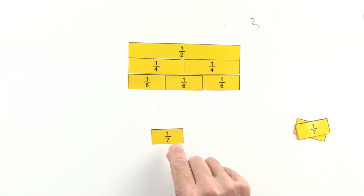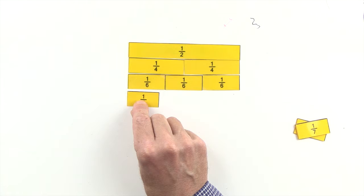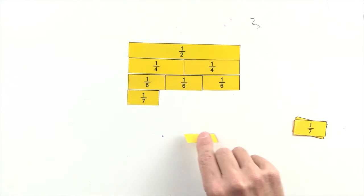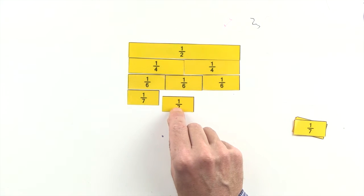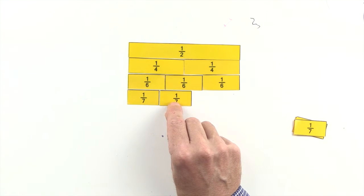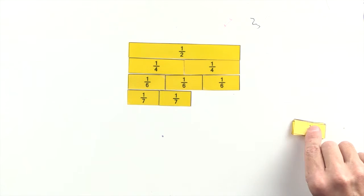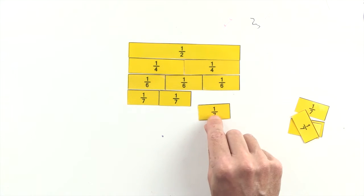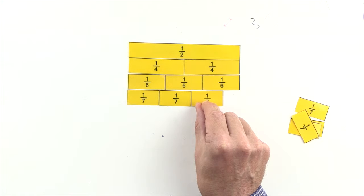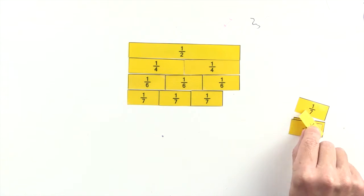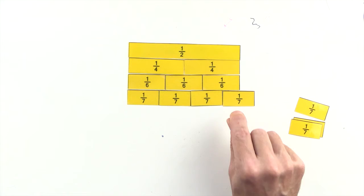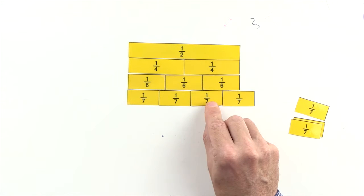One seventh, two sevenths, and three sevenths are less than one half. And four sevenths are greater than one half.